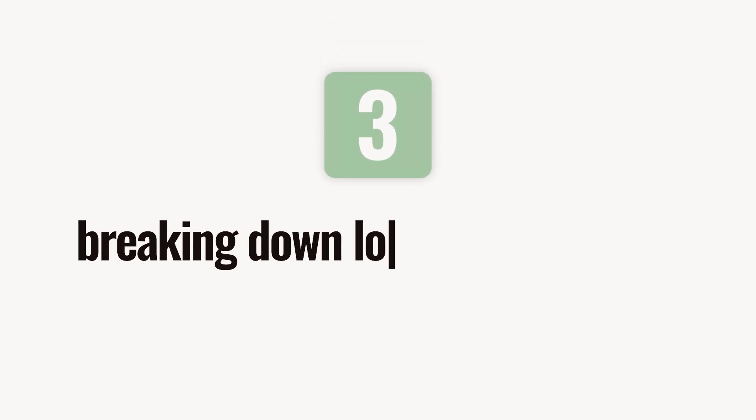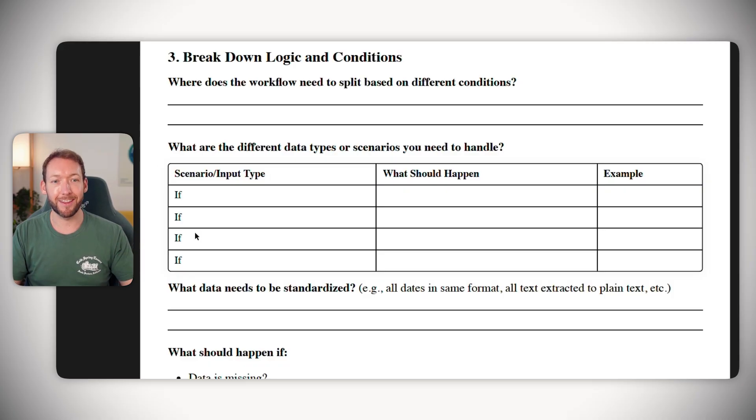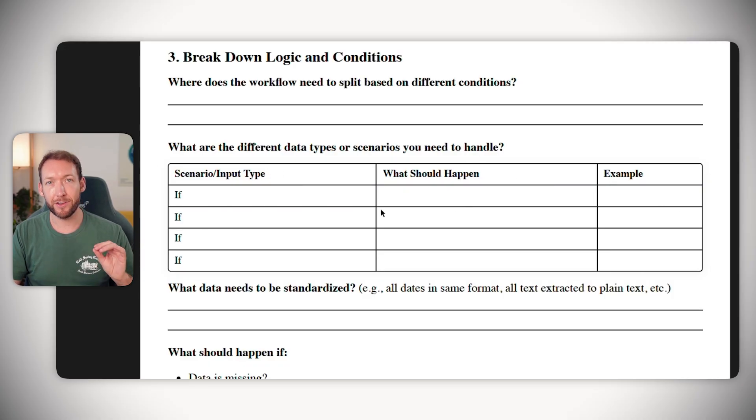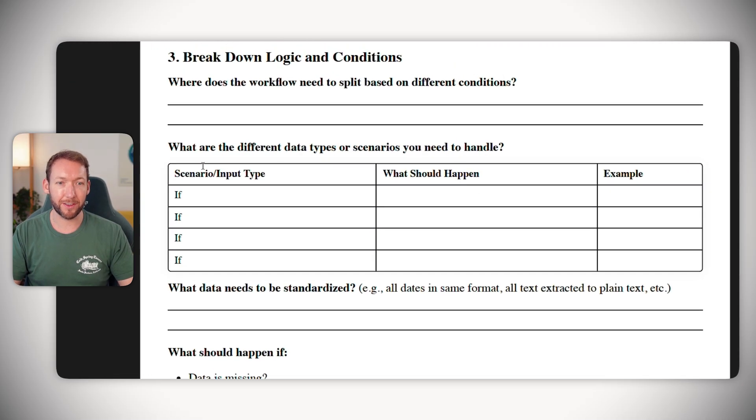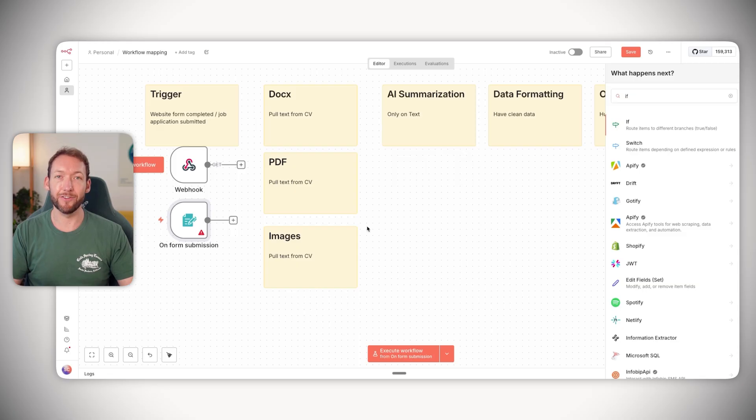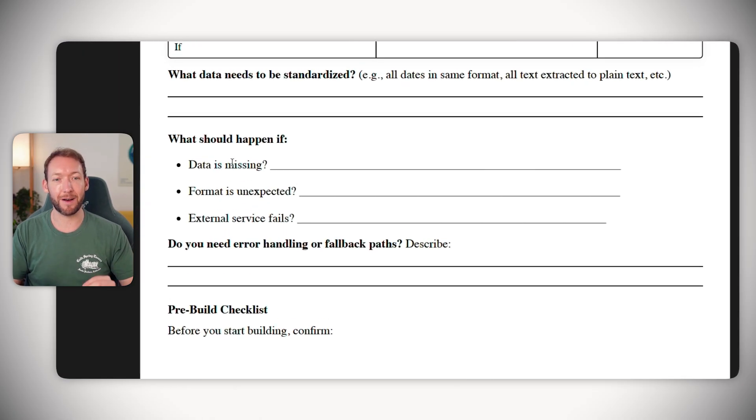So the next stage is actually working out those edge cases, the split conditions, the if this happens, then this scenarios. And this is where a lot of people get tripped up and end up building indefinitely large flows because they haven't gone through the motions of actually planning out like this. So that brings us to step three, which is breaking down logic and conditions - the if this, then what should happen scenarios. And you can do this directly on the canvas, like we're going to do now. Or you can fill out this sheet - if this happens, then what should happen and give an example here. And we're ultimately working out the input, the transformation and the output for every single stage that we've got here. But also considering edge cases, like what should happen if the data is missing? What should happen if the format is unexpected? What should happen if the external service fails?